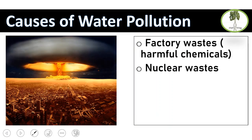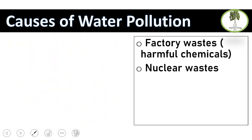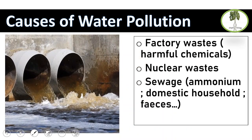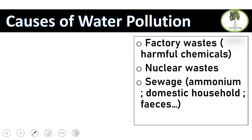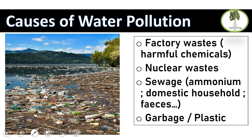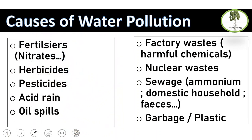Nuclear wastes and nuclear fallouts are another cause of water pollution. Sewage is a main water pollutant — it contains ammonium and domestic household feces, and causes eutrophication of water. Finally, garbage — especially plastic — can kill marine and aquatic animals and covers the surface of water. The full list: fertilizers, herbicides, pesticides, acid rain, oil spills, factory wastes, nuclear waste, sewage, and garbage.